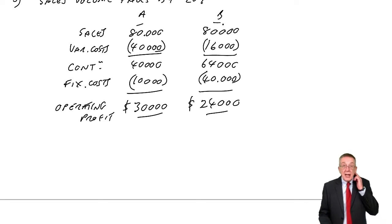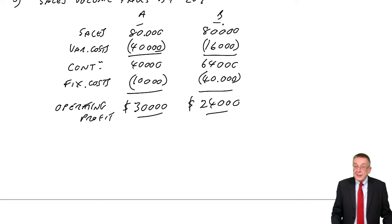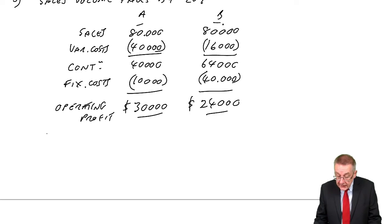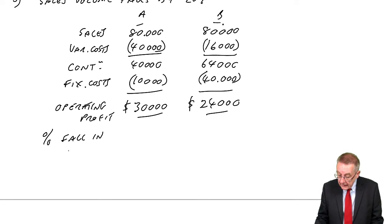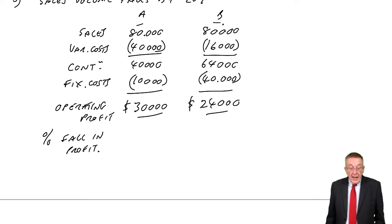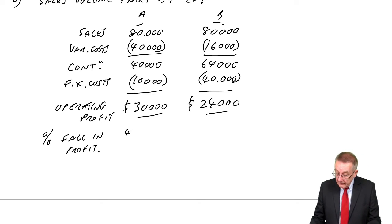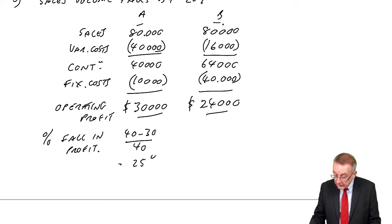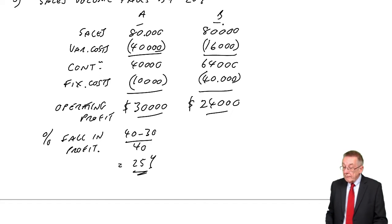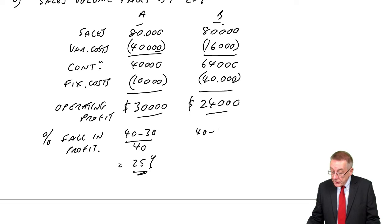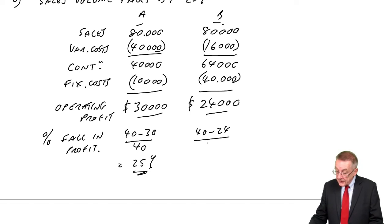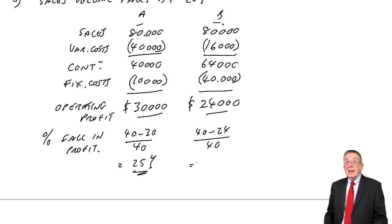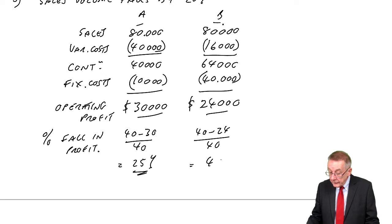In both cases, clearly, if sales volume fell, profits fell. But the percentage fall in profits: A was making 40,000 and it falls to 30,000 — a fall of 10,000 on an existing 40,000 is a 25% fall. Whereas B was making 40,000 and it falls to 24,000 — a fall of 16,000 on an existing 40,000 is a 40% fall.